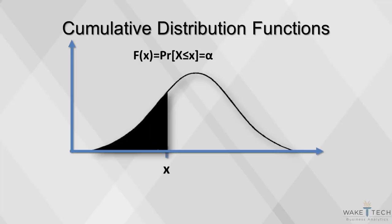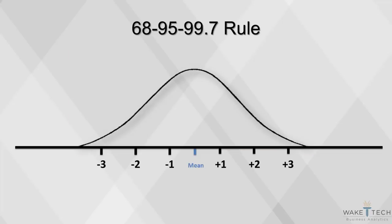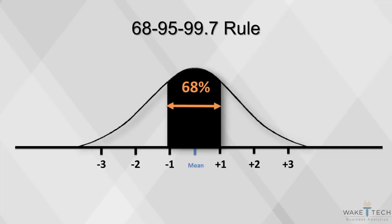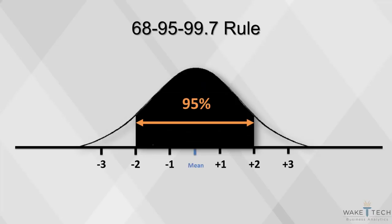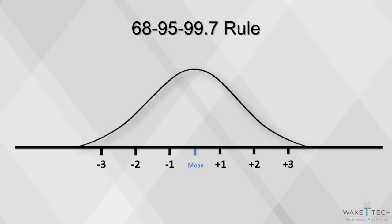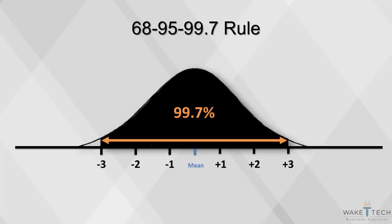The beauty of the normal curve is that no matter what its mean and standard deviation are, the area between the mean minus 1 standard deviation and the mean plus 1 standard deviation is always about 68%. The area between the mean minus 2 standard deviations and the mean plus 2 standard deviations is always about 95%. The area between the mean minus 3 standard deviations and the mean plus 3 standard deviations is always about 99.7%. That means almost all values fall within 3 standard deviations on either side of the mean.